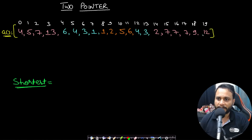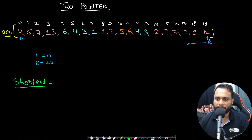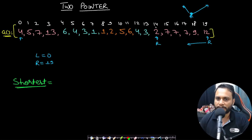Let's do a full dry run. The right pointer r is initialized to N minus 1 (index 19), and left pointer l is initialized to 0. First, move r leftward until we find the start of the last increasing curve — stopping when the element to its left is larger. We stop at index 14 because the element to its left is larger. After this while loop, r equals 14.